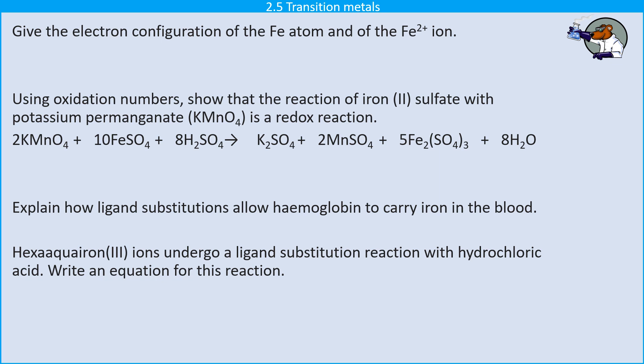As with many questions from the transition metal topic, we find that this is quite a synoptic question, which means that it includes material from all over the specification. So we start off with electron configuration, which is taught as part of atomic structure right at the start of year 12 physical chemistry. Then we move on to a little bit of redox, and then we meet the new material taught as part of inorganic chemistry in year 13.